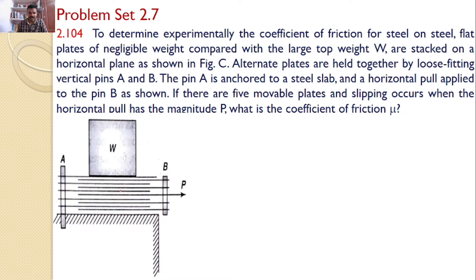That means there are total 10 plates. Out of the 10 plates, 5 plates are connected to the fixed member, that is A, and another 5 are connected to B. All these 5 plates are placed alternate to each other.